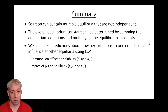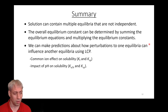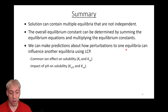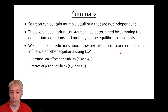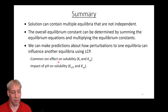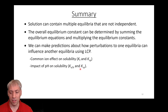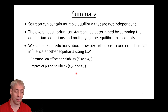To summarize: a solution can contain multiple equilibria that are not independent — more often than not, that is actually the case. Rarely do you get one thing isolated, particularly in biochemistry where all equilibria are related. We can figure out the overall equilibrium constant and overall equation by combining equilibria together. We can make predictions about how adding or removing something — whether acid-base, common ion, or complex ion formation — perturbs equilibria using Le Chatelier's principle. We can combine Kf and Ksp values, or Ka/Kb and Ksp values, to know the impact on solubility.